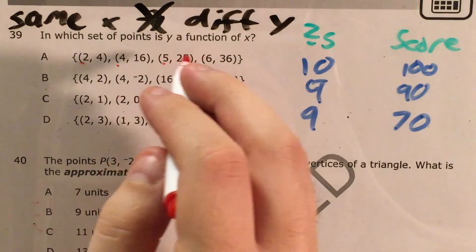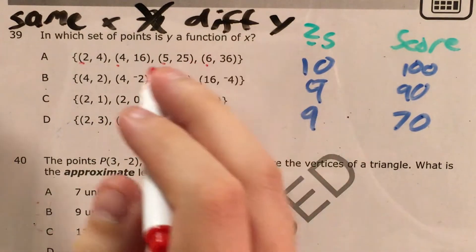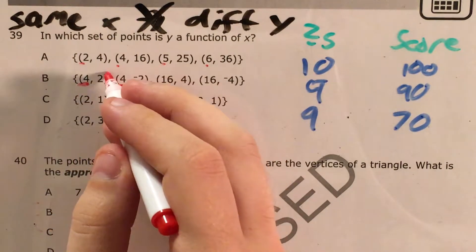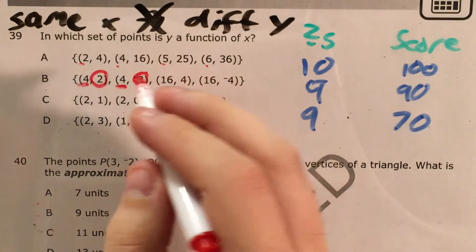2, 4, 5, and 6. We don't have the same x so I'll just look at the other choices. Choice B. x of 4 and x of 4. And the first point it's 2 and the second point it's negative 2.